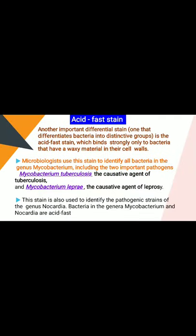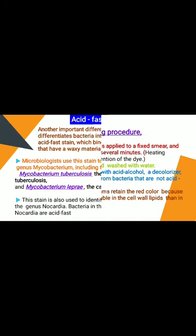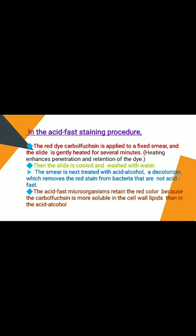Another important differential stain is the acid-fast stain, which differentiates bacteria into distinctive groups. It binds strongly only to bacteria that have a waxy material in their cell wall. Microbiologists use this stain to identify bacteria in the genus Mycobacterium, including two important pathogens: Mycobacterium tuberculosis (causative agent of tuberculosis) and Mycobacterium leprae (causative agent of leprosy). It is also used to identify pathogenic strains of the genus Nocardia.